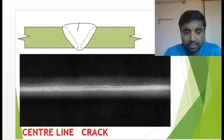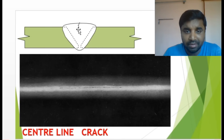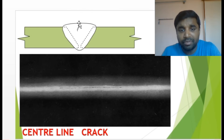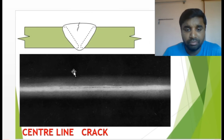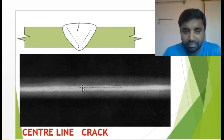Center line crack — you can see the center line crack at the middle line of the weld in the tube or pipe. One black line is coming — not over the whole area, but in some areas. That is how a center line crack looks. Star crack — we discussed star crack acceptance criteria in a previous video. How it looks: it comes under the root face interface area.